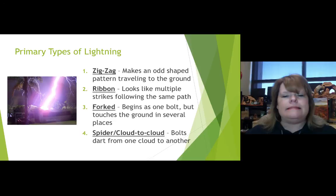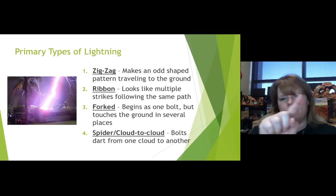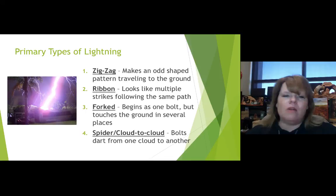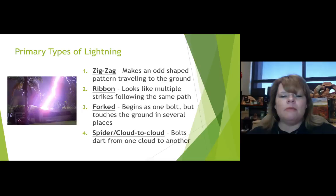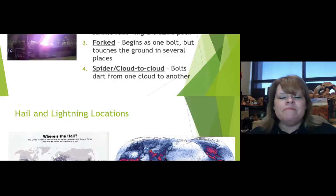What are the primary types of lightning? Zigzag makes an odd-shaped pattern traveling to the ground and is what most people think of as the flash. Ribbon looks like multiple strikes following the same path. Forked begins as one bolt but touches the ground in several different places — extremely dangerous. Spider is cloud to cloud, with a bolt starting from one cloud to another. Beautiful but extremely dangerous.